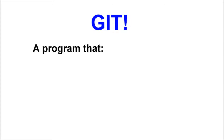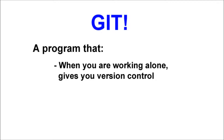Git is a program that, if you're working on your own, gives you version control. What that means is that as you're coding, it's good practice to save iterations of your code as you go along. You've got an archive of working code, and if you need to revert back to an earlier version, you could do so easily. The problem is that it's a bit of a hassle to continually stop and save your code under a different file name. Git gives you a faster way to do that.